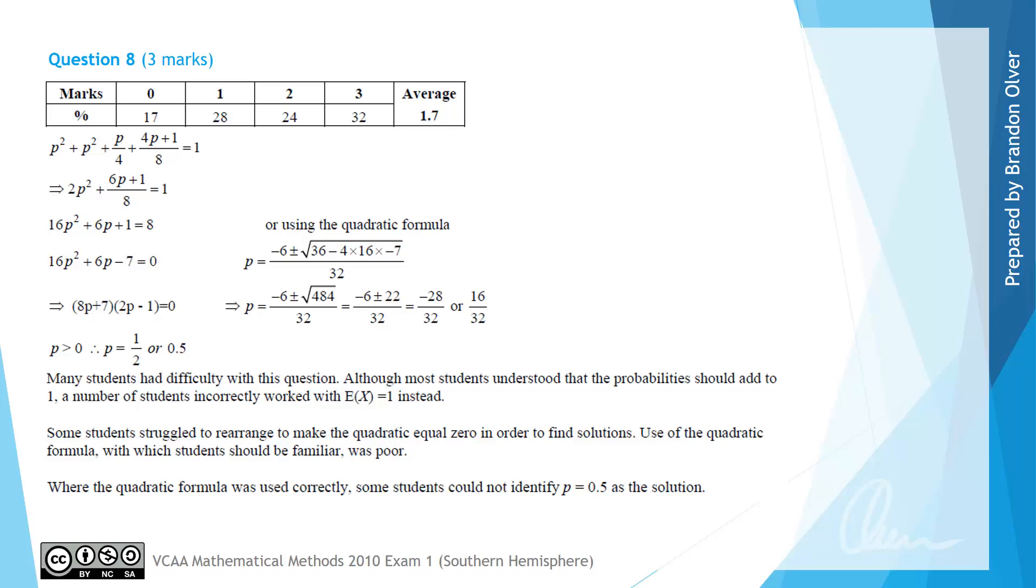So what the examiners did describe is that many students had difficulty with this question, and that's unsurprising considering the amount of calculations that you'd need to perform to get that answer correct. And although most students understood that the probabilities should add to 1, a number of students incorrectly worked with the expected value of x equals 1 instead by mistake. Furthermore, some students struggled to rearrange to make the quadratic equal to 0, which is what we need to do if we're going to solve a quadratic equation.